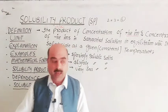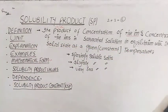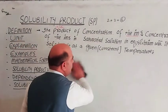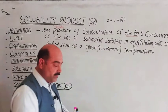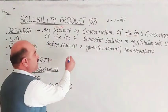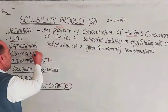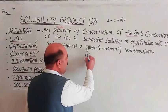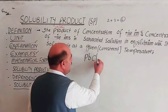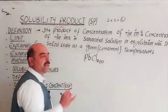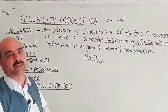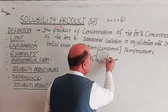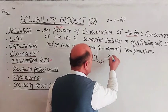Let us take an example to explain this better. Our example is lead chloride, PbCl₂. This is a sparingly soluble, slightly soluble salt in solid state. When water is added to it, PbCl₂ ionizes in water.